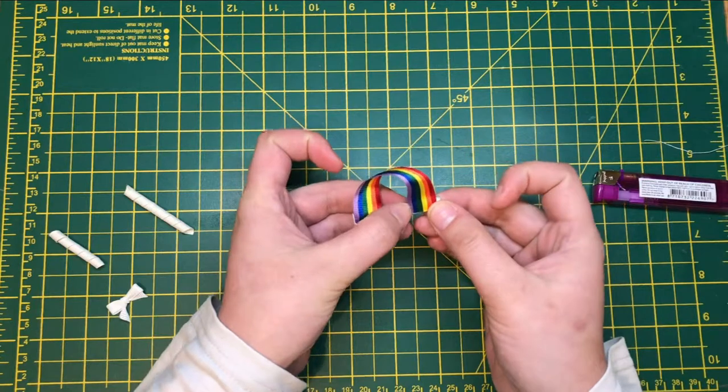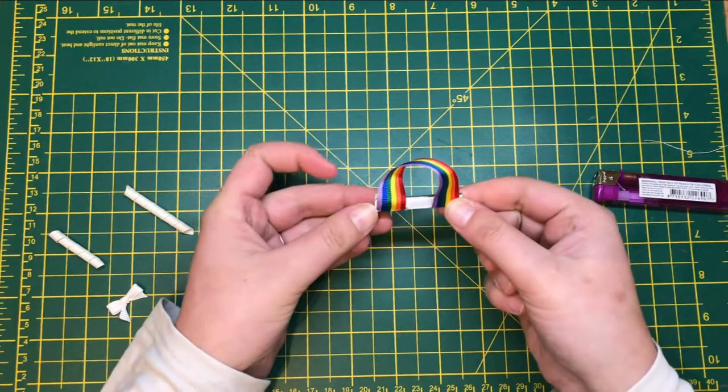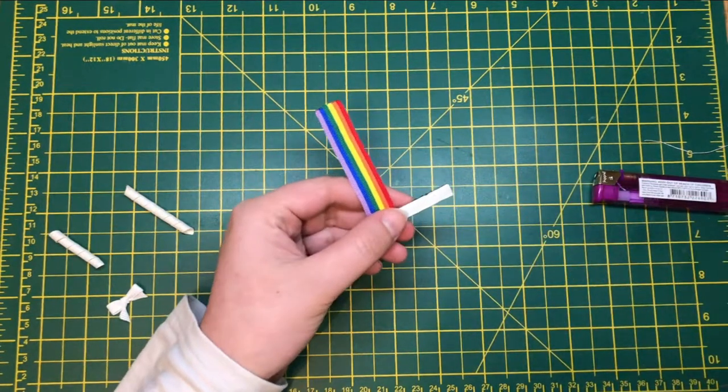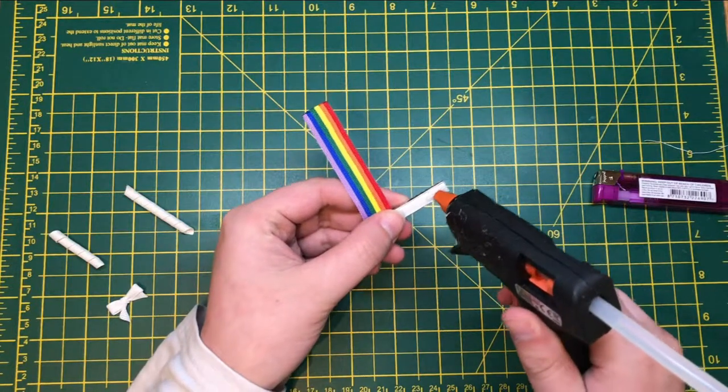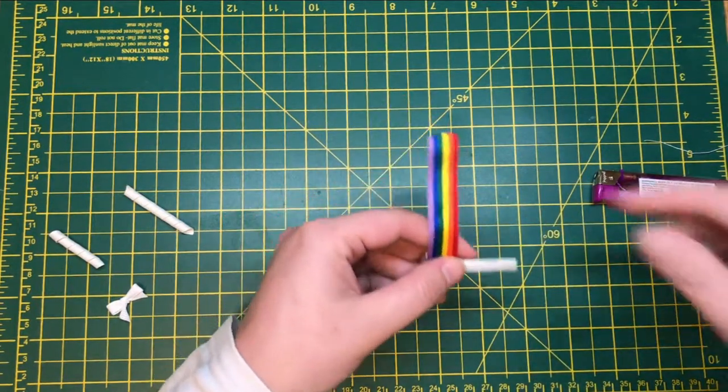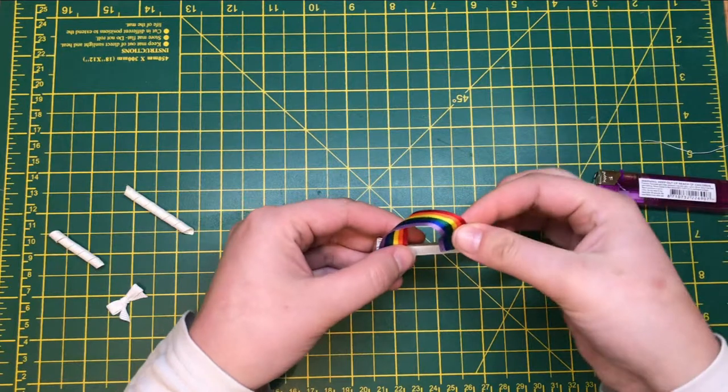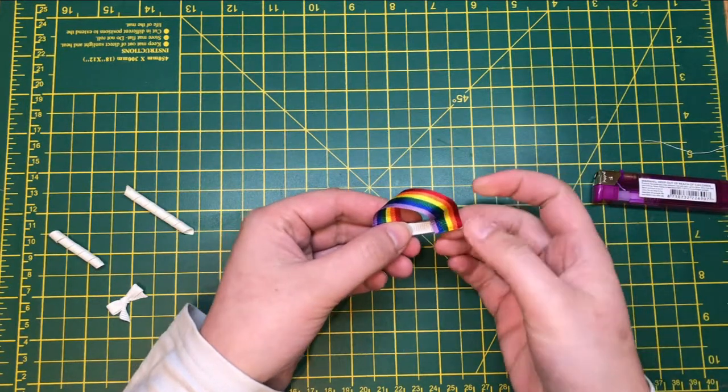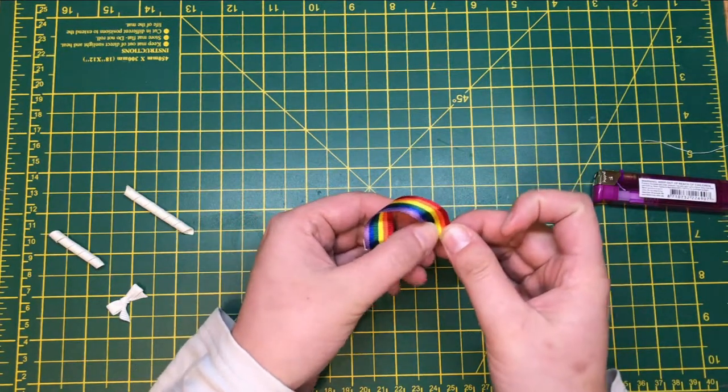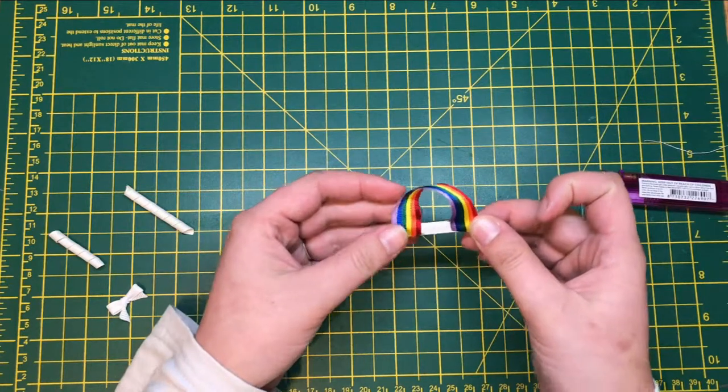You're going to glue that bit at the end of this clip, so then the rainbow is done. There we go. And then glue. There we go. And there's your rainbow done already.